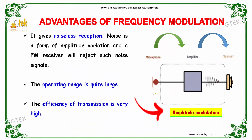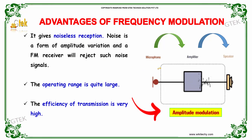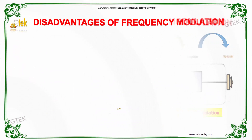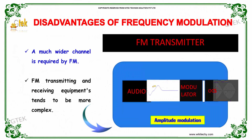The advantages of FM include noiseless reception. Noise is a form of amplitude variation, and an FM receiver will reject such noise signals. The operating range is quite large and the efficiency of transmission is really high. A much wider channel is required for an FM transmitter, and FM transmitting and receiving equipment tends to be more complex.